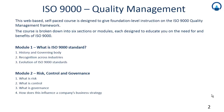Module 2 is about risk control and governance — this is a very important module in the entire framework. It will help you understand the basic crux of the model. Here we will learn about what is a risk, what is a control, what is governance of risk and control, and how all of these three in conjunction influence a company's business strategies.